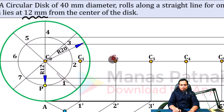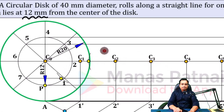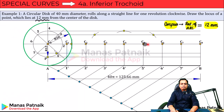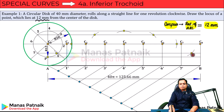Similarly, with C2 as center, place the compass at C2 and cut an arc on the line passing through 2 — this is point P2. With C3 as center, cut an arc on the line through 3 — this is P3. Continue: C4, C5 through five, C6 cut an arc for P6, C7 on the line through seven for P7, and finally C8 for P8.